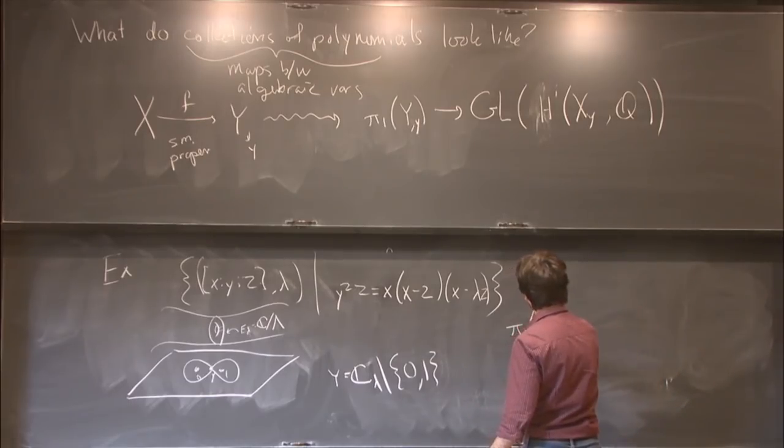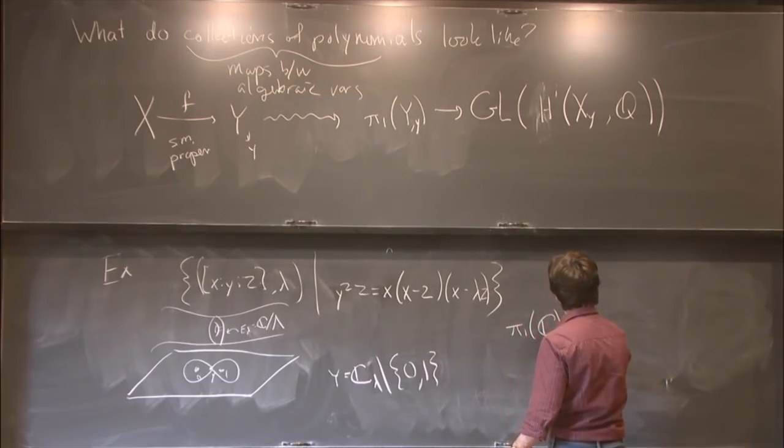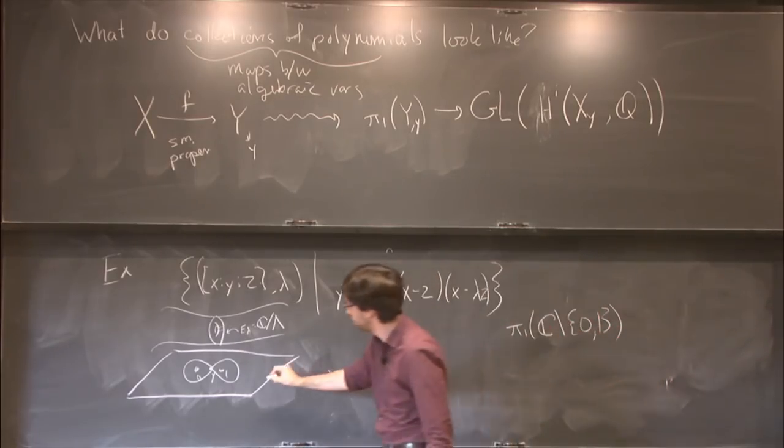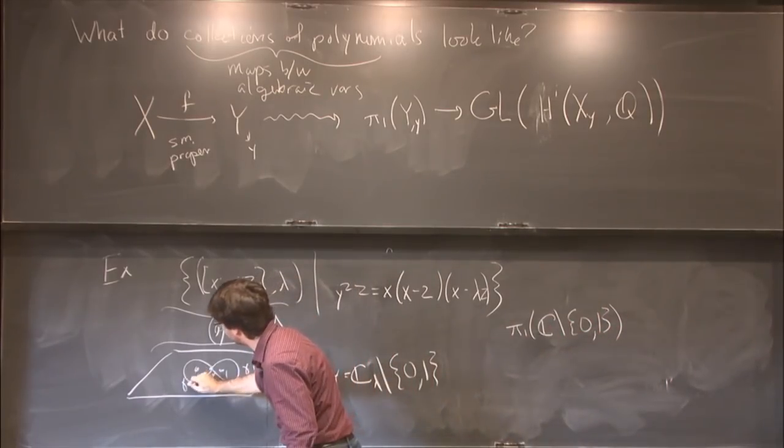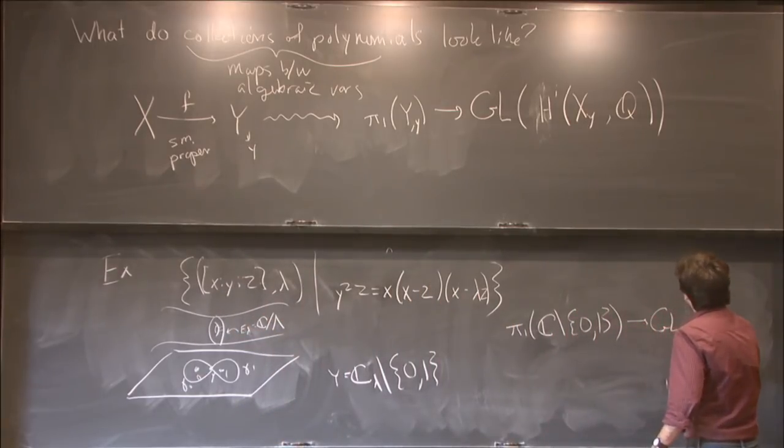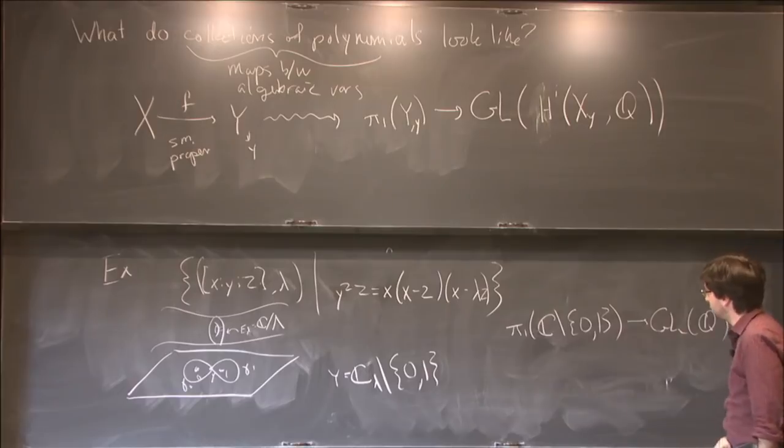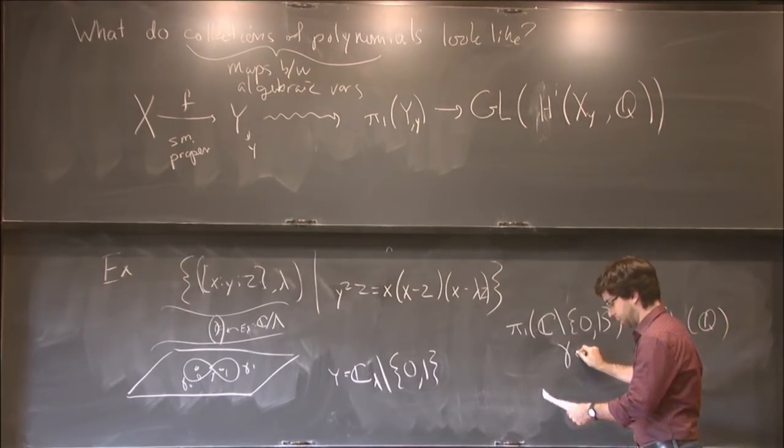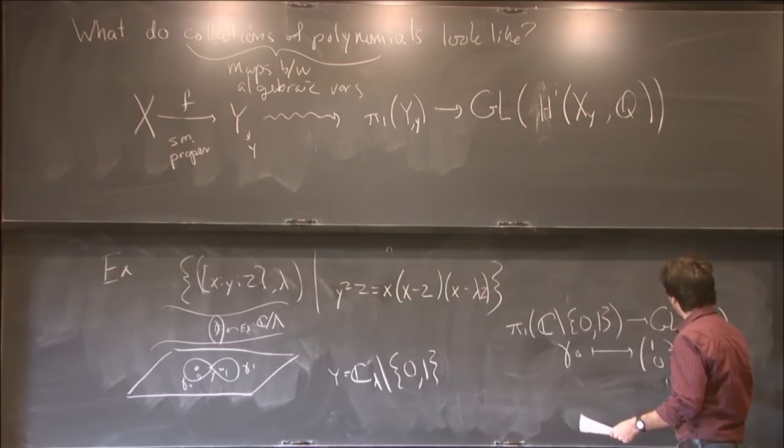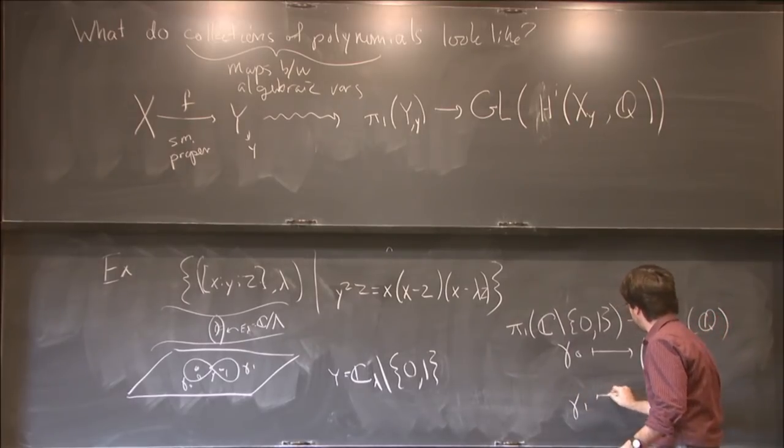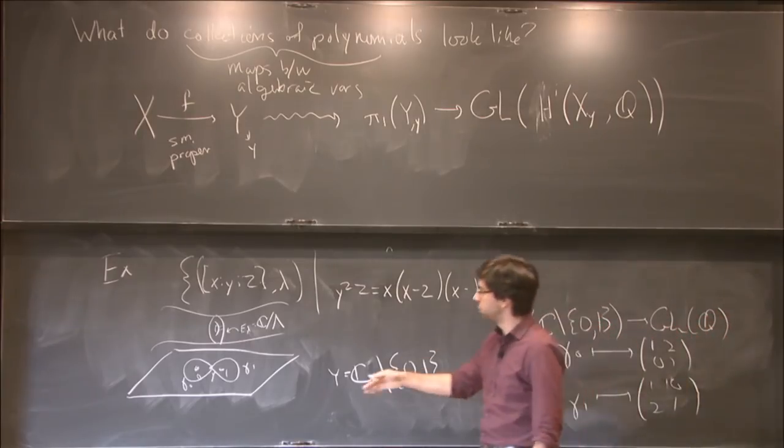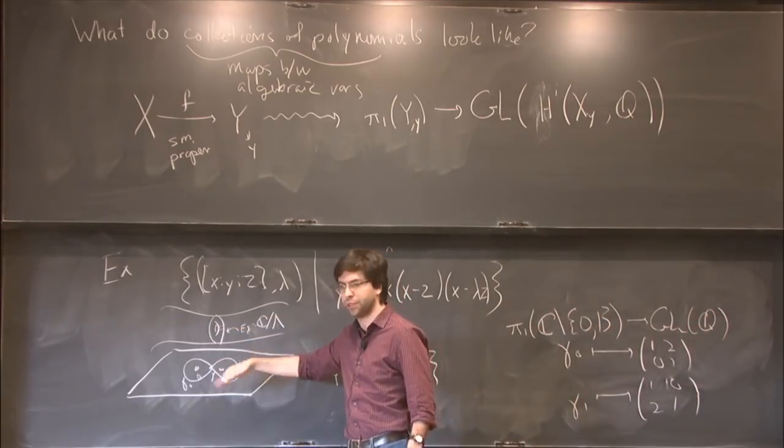In this example, we can make everything very precise. We get a representation of the fundamental group of c minus 2 points, which is just free on 2 generators. I drew them here, so this is a loop around 1 and a loop around 0, into GL_2(Q). What's the representation? I'll send gamma 0 to the matrix (1,2,0,1), and gamma 1 to the matrix (1,0,2,1). Here I've suppressed some choice of basis of the cycles here and orientation of these loops.